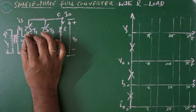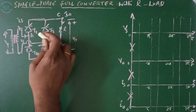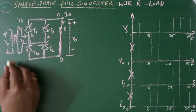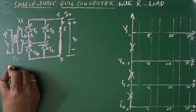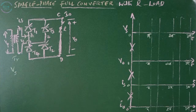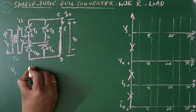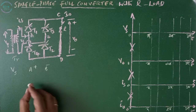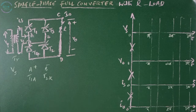In a single-phase full converter, this is a bridge circuit where the supply is given to terminals A and B, and the load is between terminals C and D. When supply is given through the transformer primary, the secondary has voltage Vs given to the circuit. When terminal A is positive and terminal B is negative, thyristor T1's anode is positive and thyristor T2's cathode is negative.